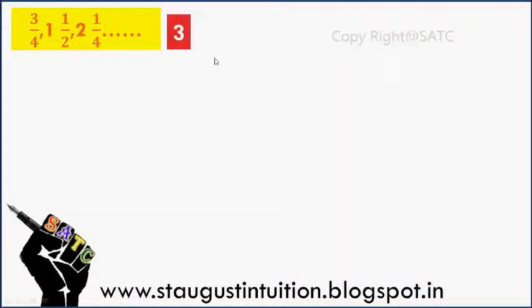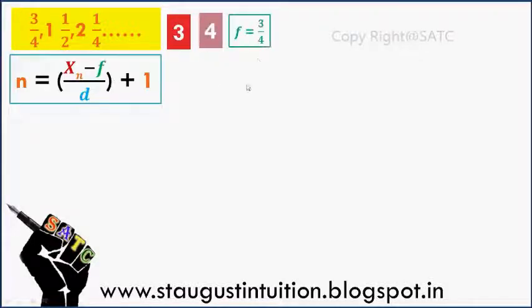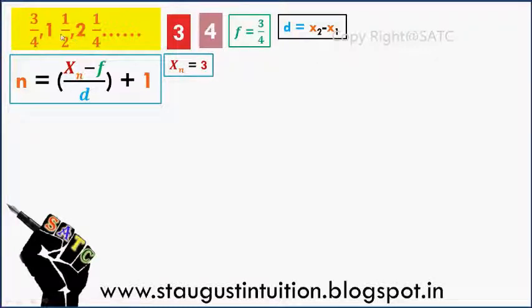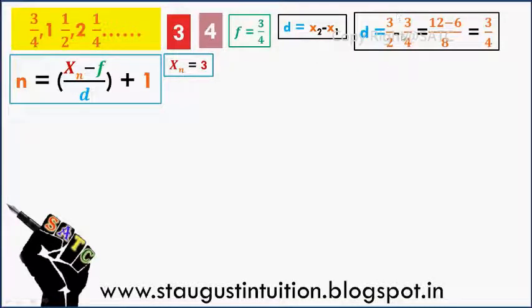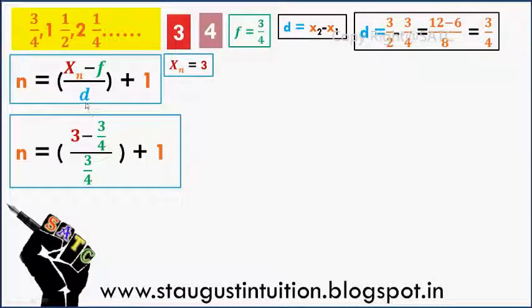Now let's check: 3 is in the sequence. Let's check 3 is 3 by 4. Common difference is x2 minus x1. Now x2 is 3 by 2 minus 3 by 4. The answer is 3 by 4. This is 3 divided by 2 is equal to x. The quality — 3 per one is equal to match, 3 is equal to 3 by 4. The answer is equal to 4.